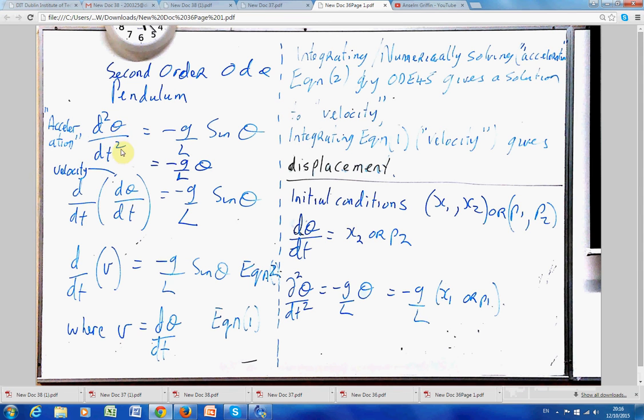So we're doing d2 phi d theta squared, as per the notice, minus g over l sin theta. And if theta is very small, that approximates minus g over l theta. So I broke this down, the second-order here, I broke it down into d dt of d phi dt. In other words, differentiate with respect to time the velocity, you get the acceleration. Minus g over l sin theta, minus g over l theta.